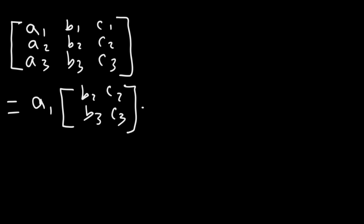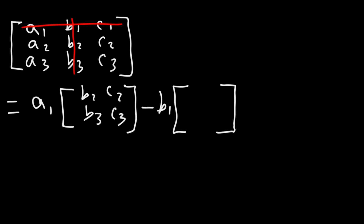And then it's going to be minus the second element in the first row, that's B1. And then to find the four elements that will go in the next 2x2 matrix, eliminate the row and column that contains B1. And so you'll be left with A2, A3, C2, C3.